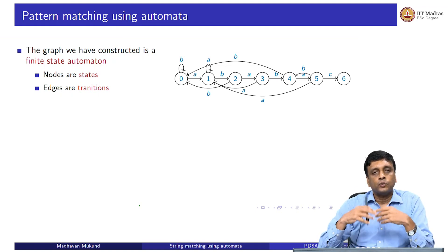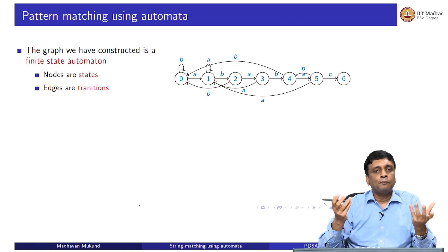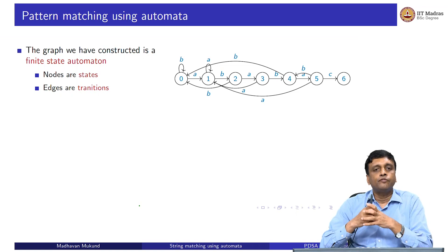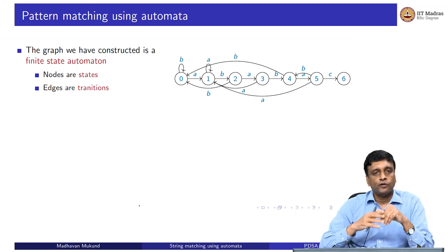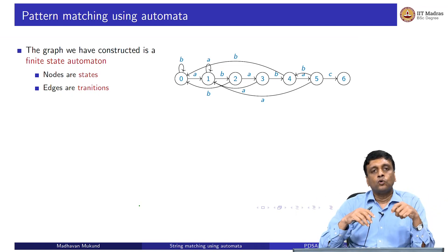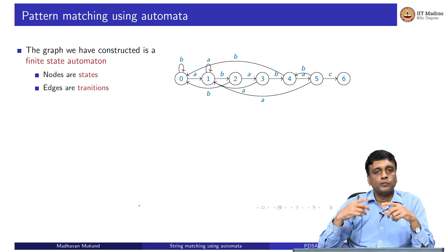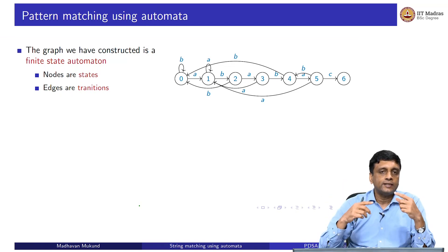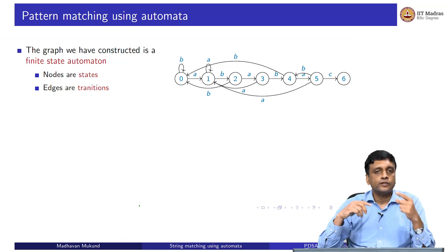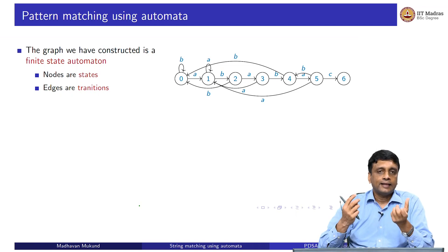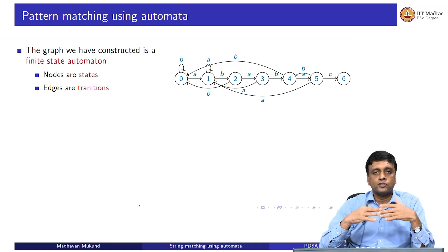An example of states: think of a lift. The lift sits with its door open — if you press the door-close button, it goes to a state where the door is closed. Press a floor number and it goes to a new state on a different floor, then the door opens. Each state transitions to the next by some action. Here, our actions are reading a letter, and the states represent how much of the prefix is matched so far.